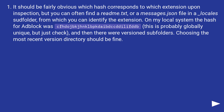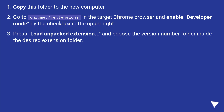On my local system the hash for AdBlock was cfhdodevrkshklkdabkdlif — this is probably globally unique, but just check. There were also version subfolders; choosing the most recent version directory should be fine. Copy this folder to the new computer.